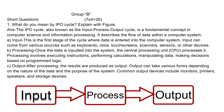It describes the flow of data within a computer system. A: Input — this is the first stage of the cycle where data is entered into the computer system. Input can come from various sources such as keyboards, mice, touch screens, scanners, sensors, or other devices.